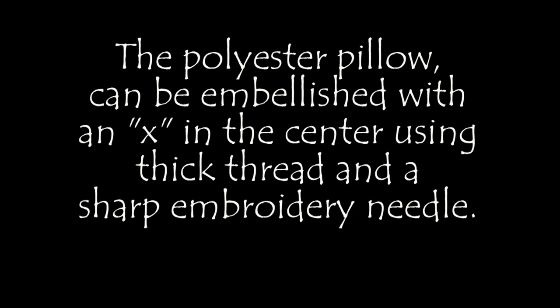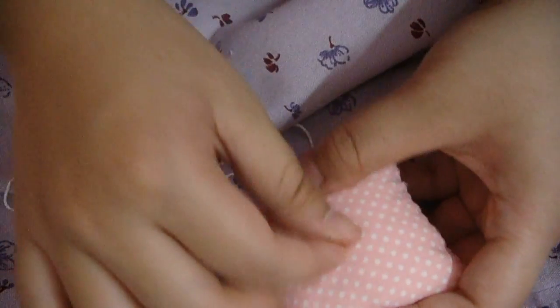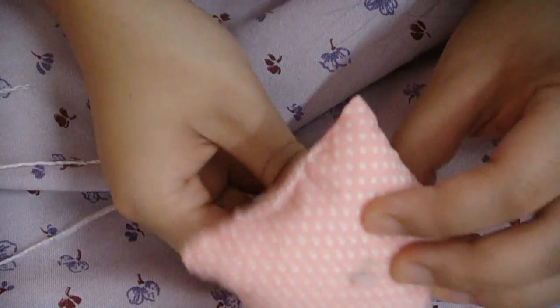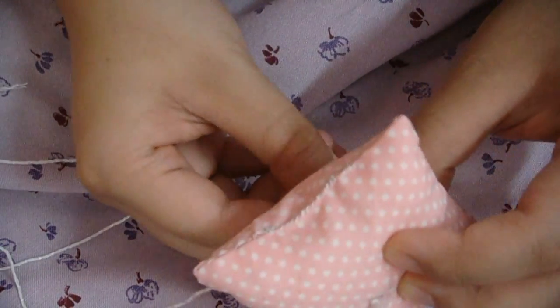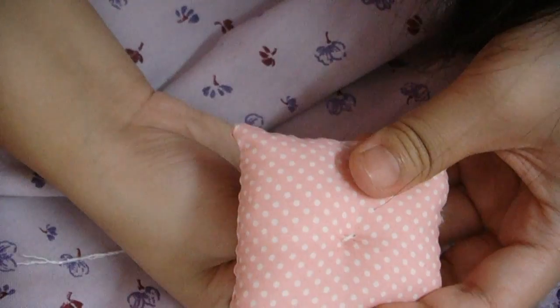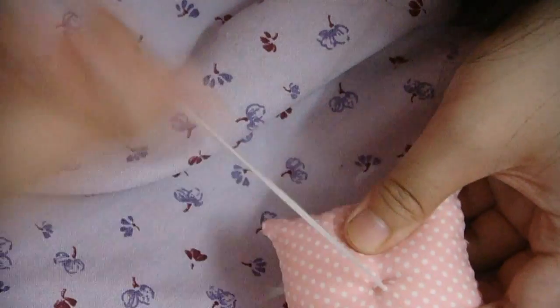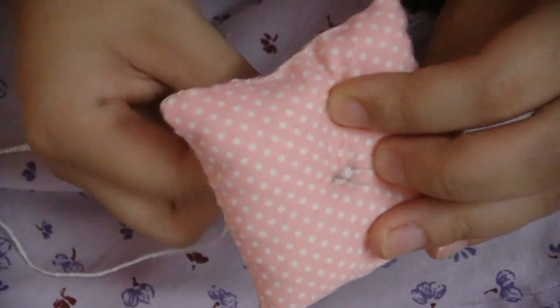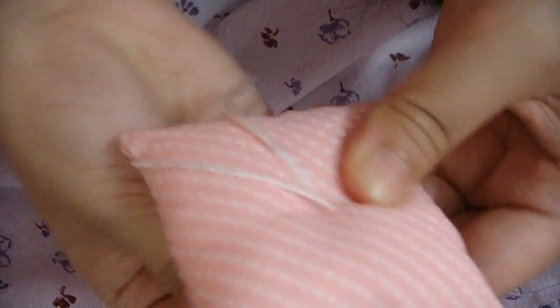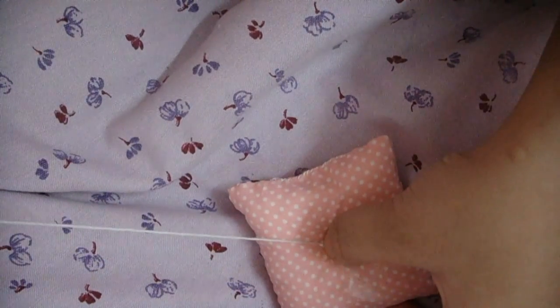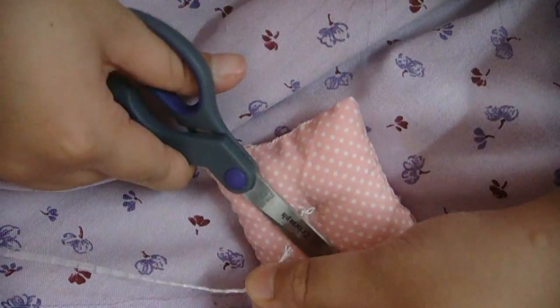Now for the polyester pillow you can do this. Poke from the bottom, come out in the center and make a diagonal line. Then go back down to the bottom and come up to the top again and make a line that crosses over that one right in the center and pull tight. And then make a knot and cut off your thread.